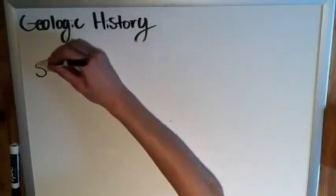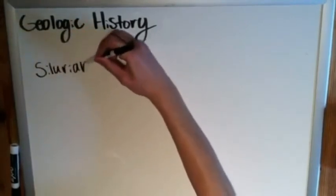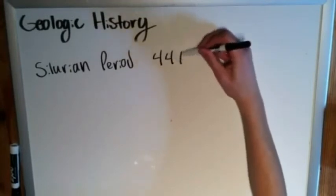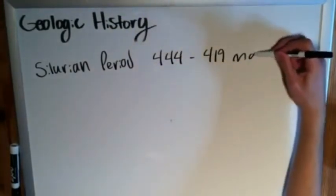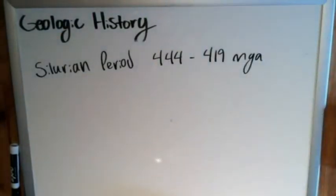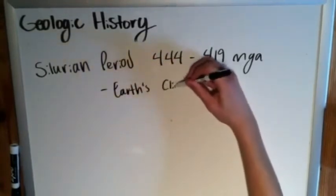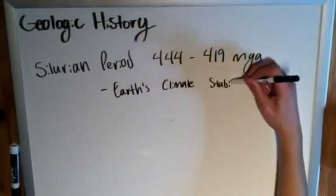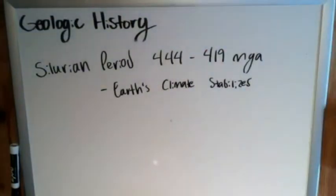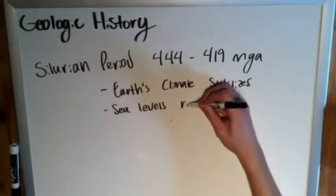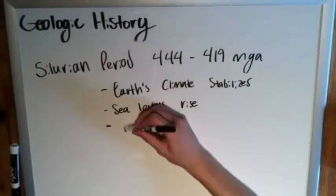Moving onwards, we have the Silurian period — another fun one to say — between 444 and 419 million years ago. This one is known for the Earth's climate really stabilizing, which is important to the development of future life. With that, we see sea levels rise, and some developments in marine life such as our first jawed fish.